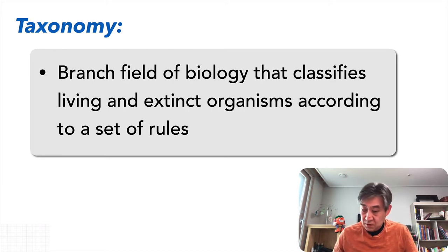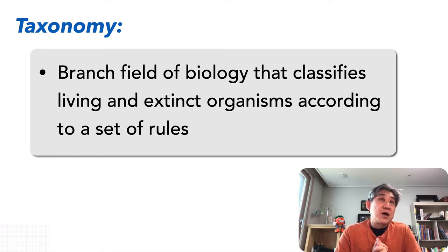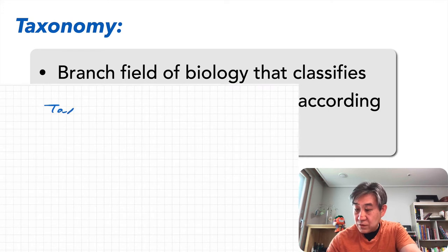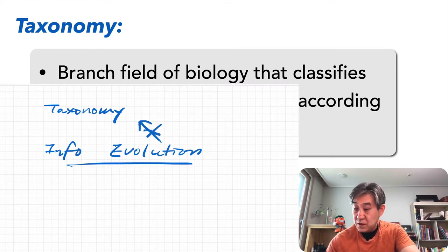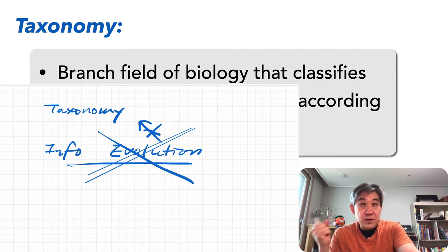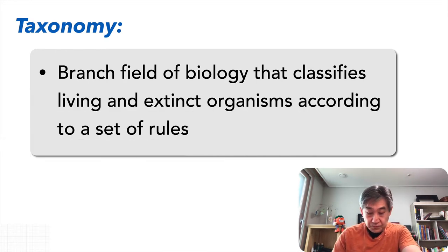Now, taxonomy — although it looks very similar to phylogeny on the surface — is strictly about organization and classification. In taxonomy, you don't really have to include any information about evolution. It's not an absolute requirement; you can include it if you want, but you're not required to.